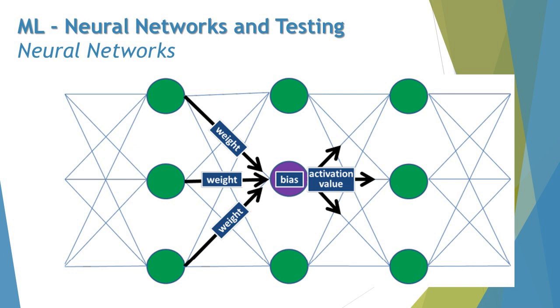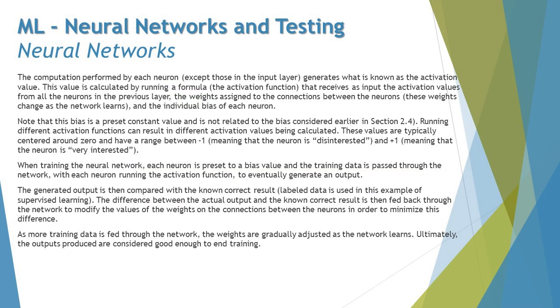So let's try understanding this particular terminology and how exactly each node functions as required. So the computation performed by each neuron, except those in the input layer, generates what is known as the activation value. This value is calculated by running a formula—the activation function—that receives as input the activation values from all the neurons in the previous layer. So all the neurons will give you activation value to a particular node, and that will be collected together at one place.